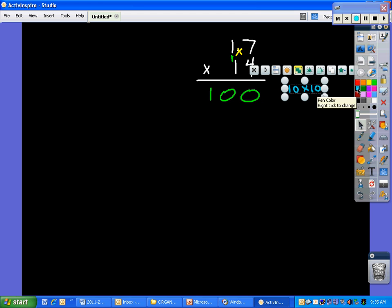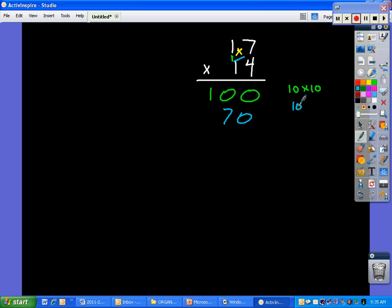For our next one, we'll go 10 times 7, which is 70. Now, we'll do 10 times 4, which is 40. And lastly, we'll do 7 times 4, which is going to give us 28. Add those up. We get 8. 7 plus 4 is 11. Plus 2 is 13. So, we'll carry our 1. And we get 2, 3, and 8. Our decimal was taken out. Let's put it back in.